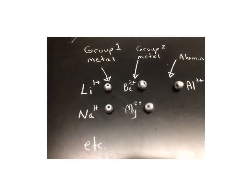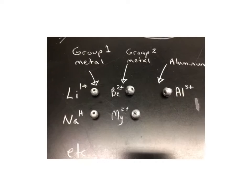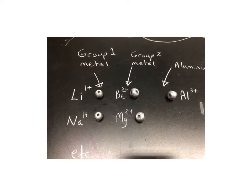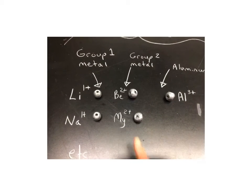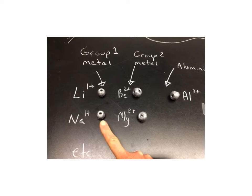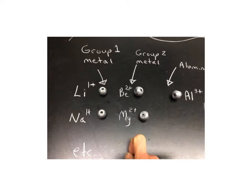For the silver spheres we have our group 1 metals like lithium and sodium that each form one plus ions. They have one hole that represents the one electron that they give away.